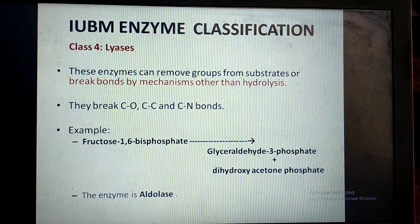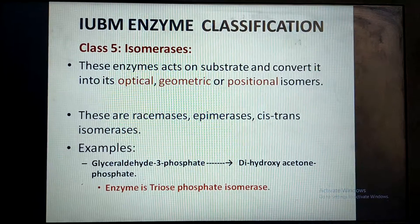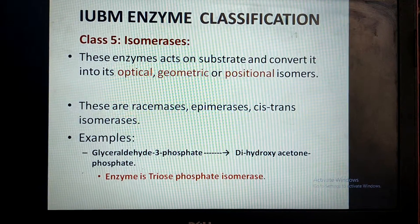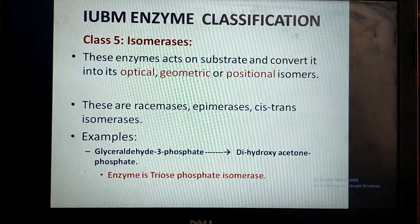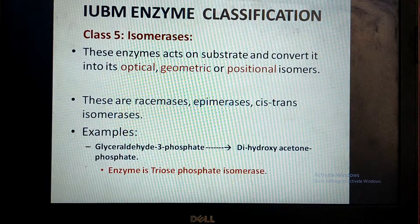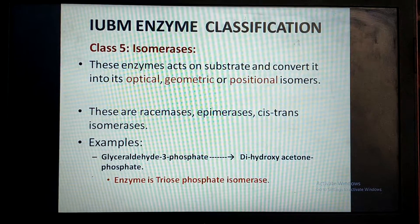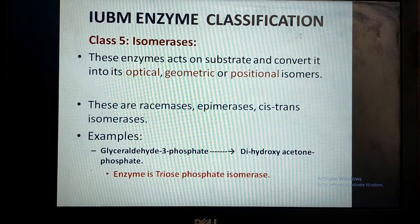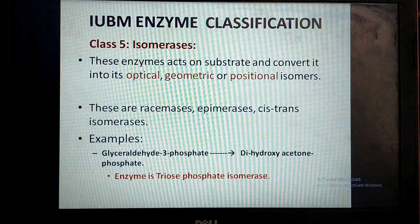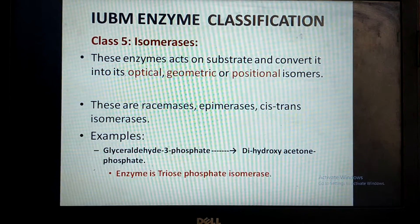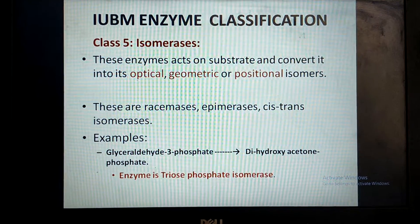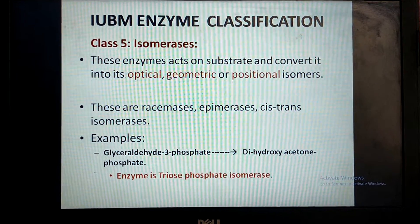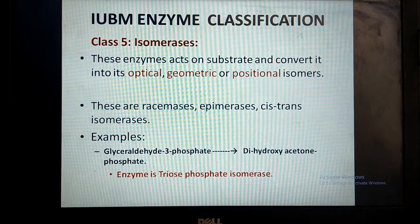The fifth class is isomerases. In this class, enzymes act on the substrate and convert it into its optical, geometrical, and positional isomers. These isomerases convert the substrate into its isomers. These enzymes may be racemases, epimerases, or cis-trans isomerases. For example, the enzyme triose phosphate isomerase acts on glyceraldehyde-3-phosphate and converts it into dihydroxyacetone phosphate.